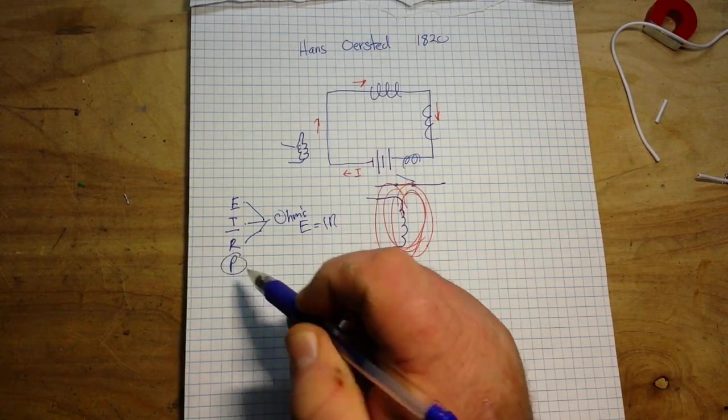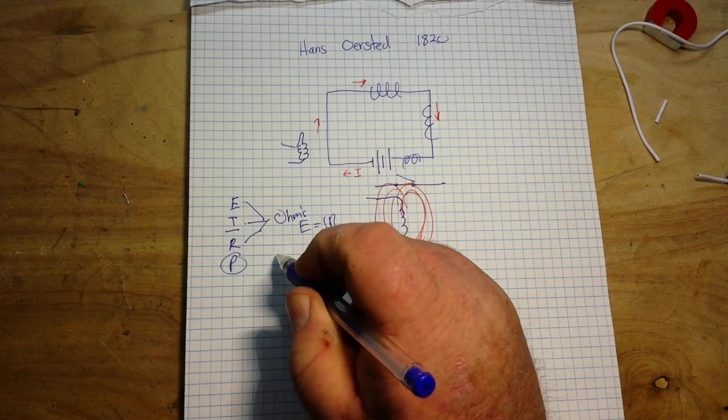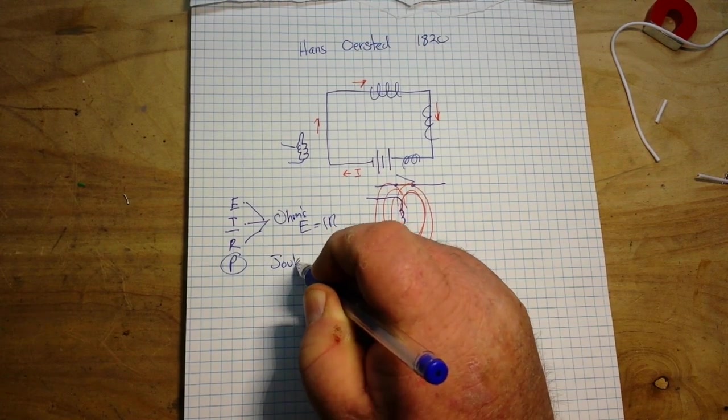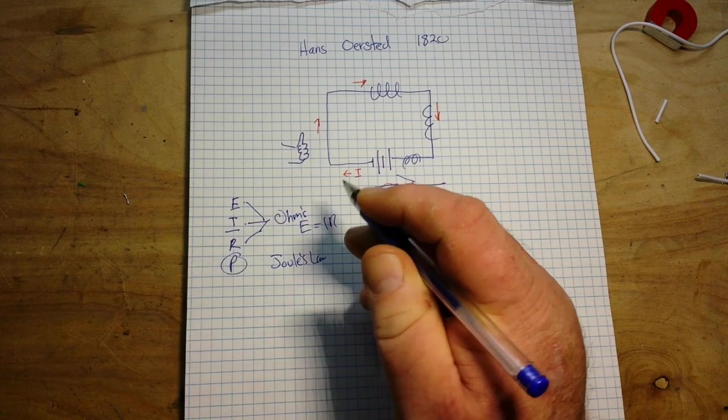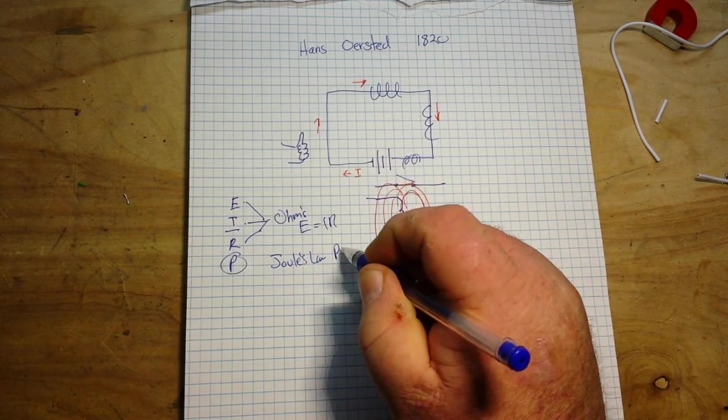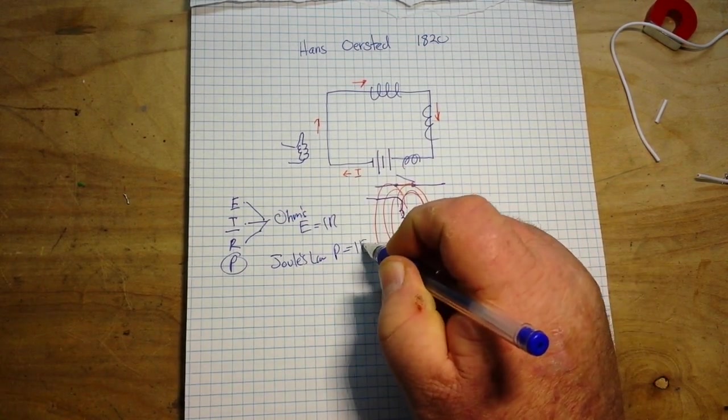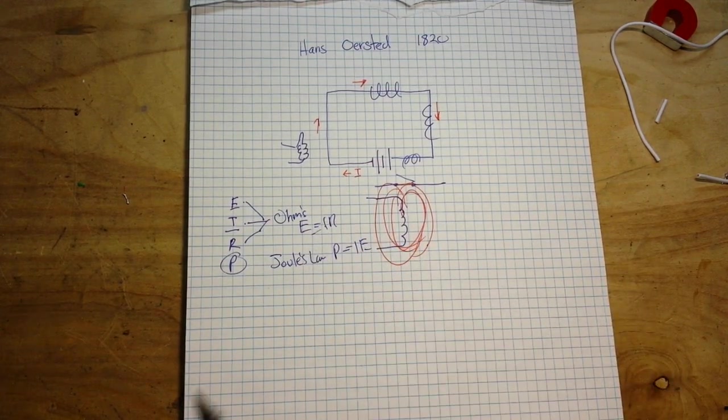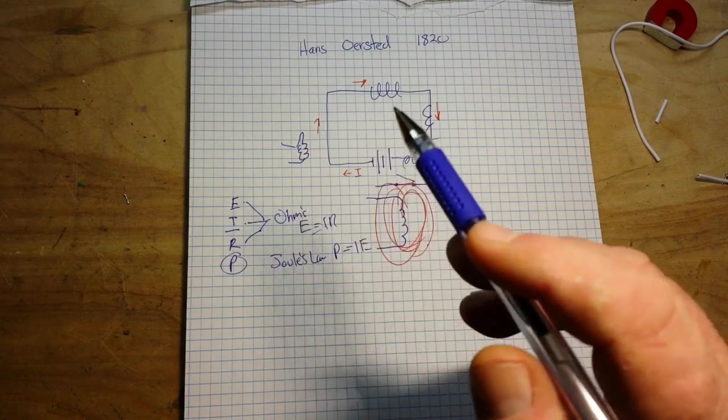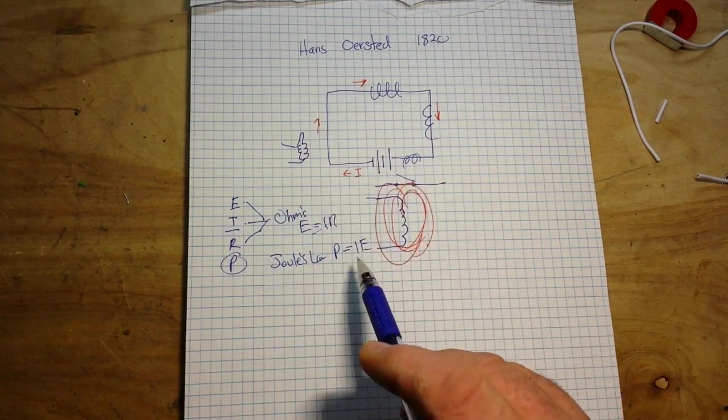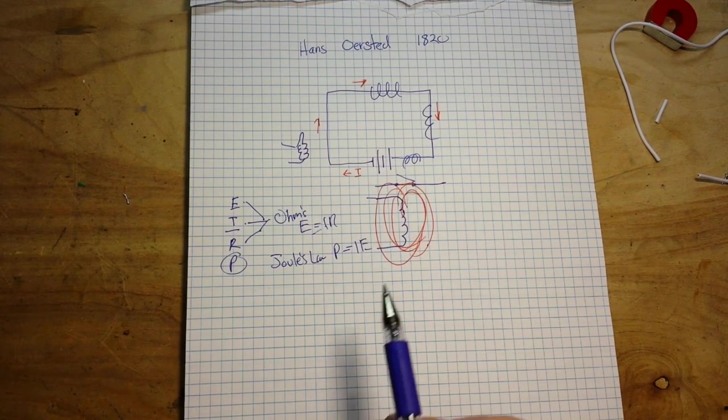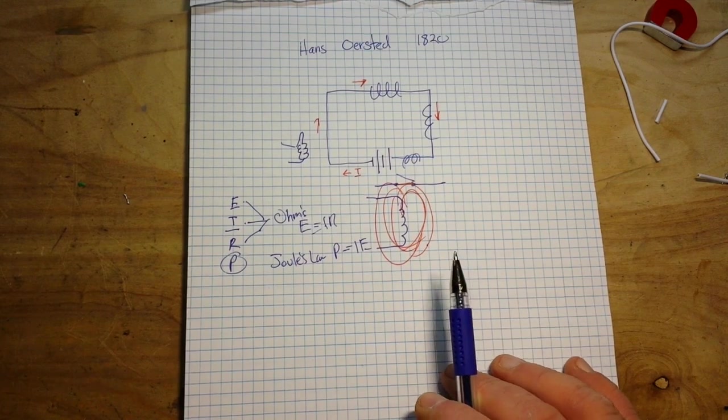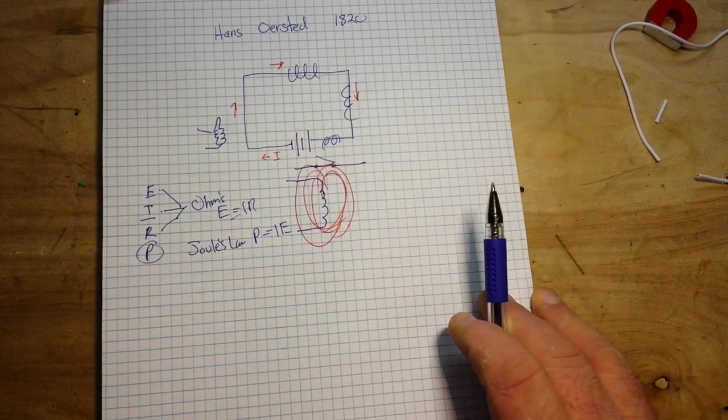But when we want to bring in power, well then we have to talk about Joule's law, right? P equals I times E. So I times E are on opposite sides of our equation up here, so we need Ohm's law to understand that, and then we can use Joule's law to figure out the power from that. So that is the electric side of the equation.